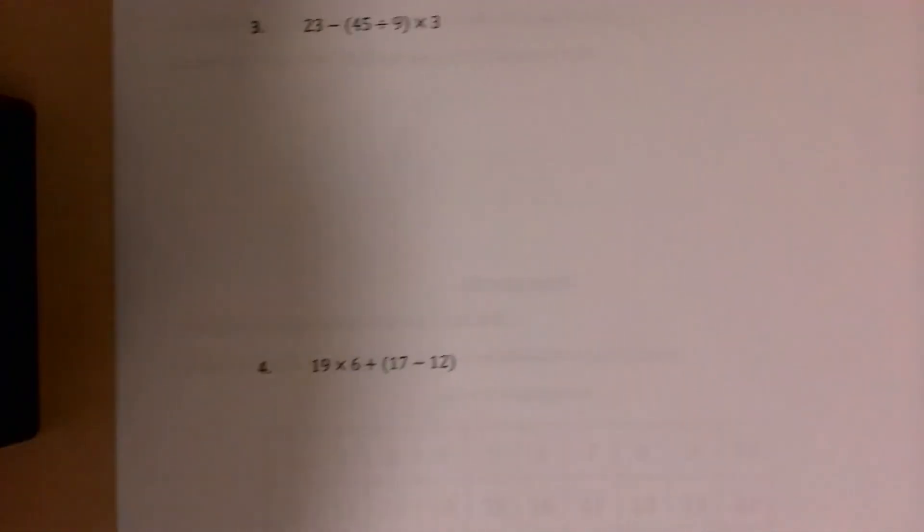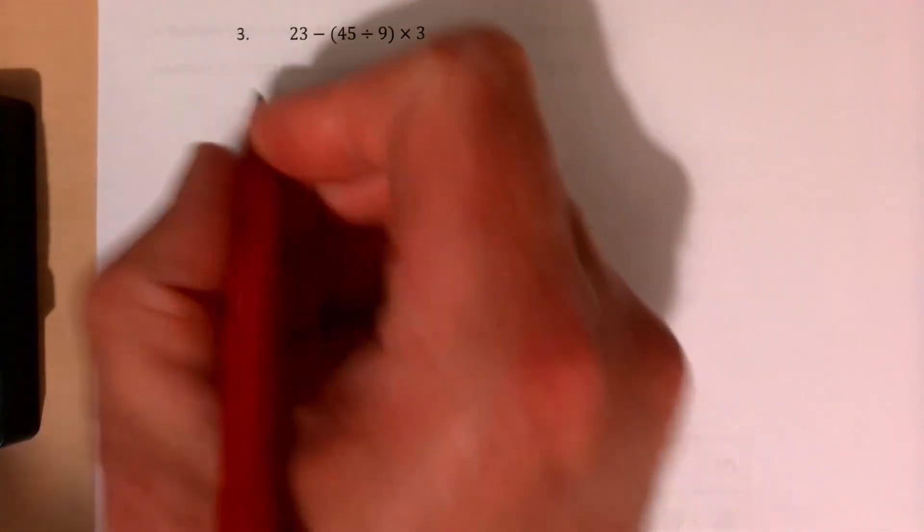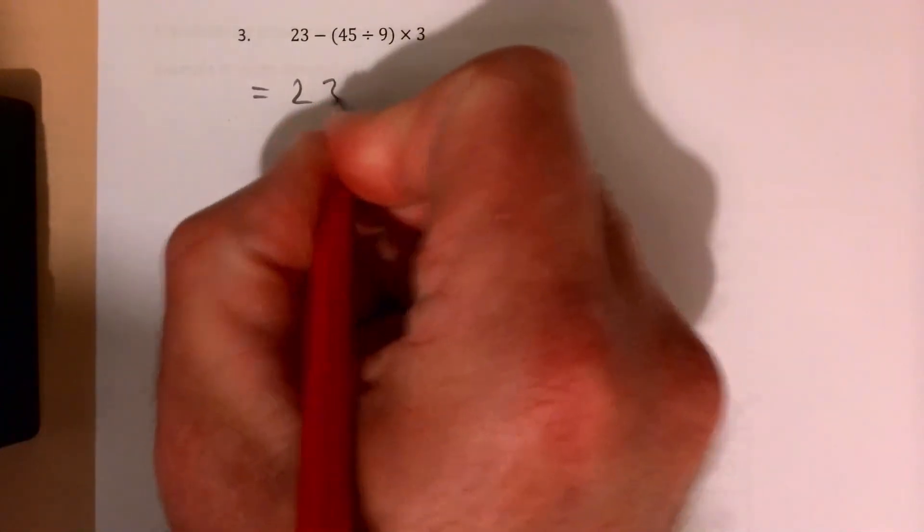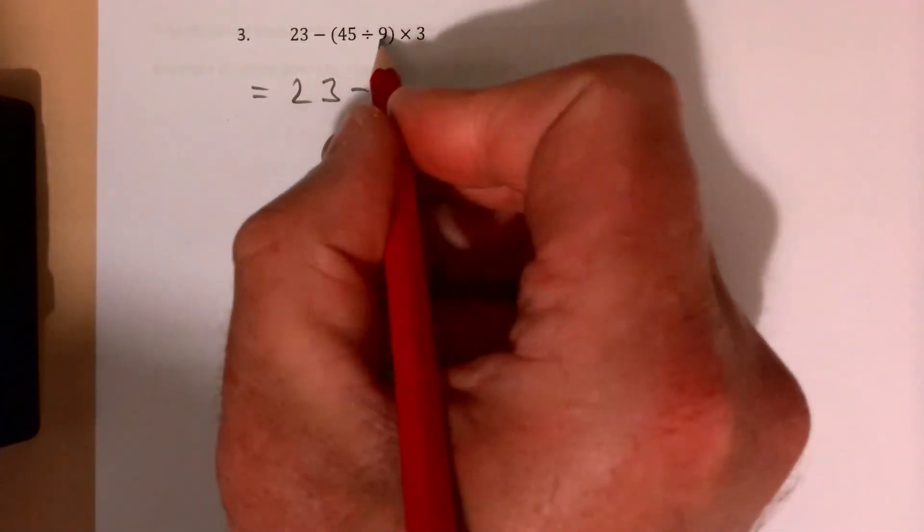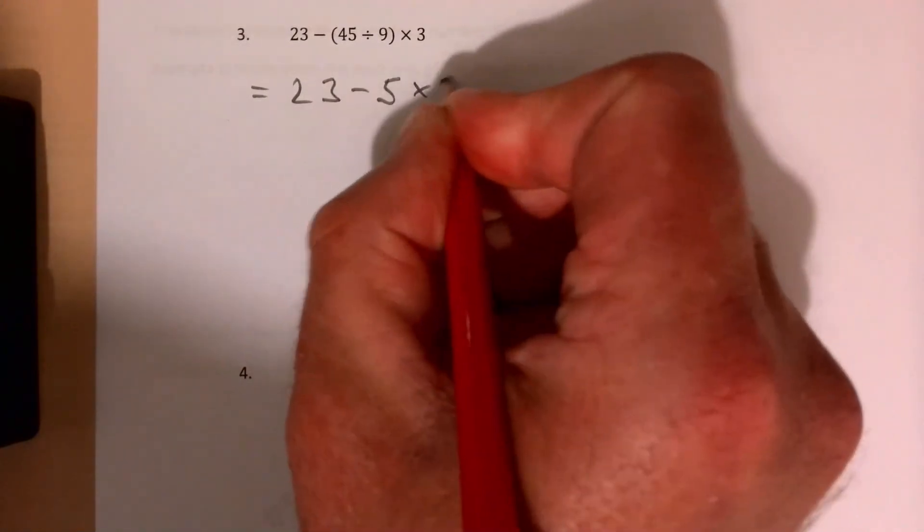Okay, next question. I want to see here with brackets. So that's going to be the first thing that I'm going to do here. So I'm going to write out again the first line, only I will have the bracket bit done. 23 take away 45 divided by 9 gives me 5, times 3.